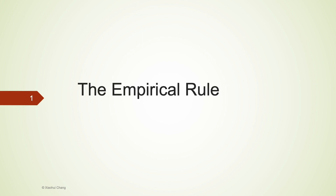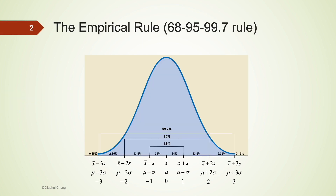Let's take a look at the empirical rule, also known as the 68-95-99.7 rule. This rule is only applicable if we know for sure our data follow a normal distribution. This is very important — the empirical rule only applies if the data are normal.